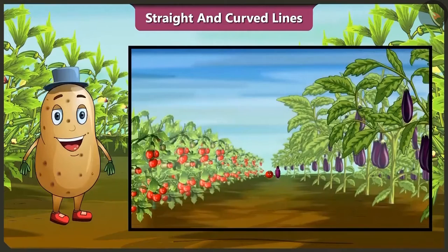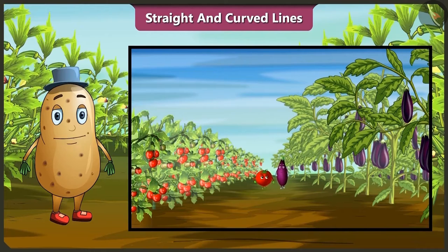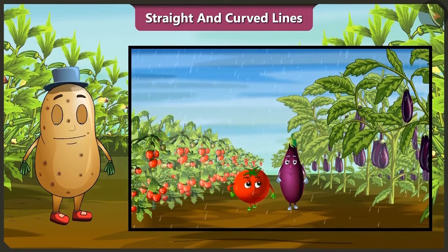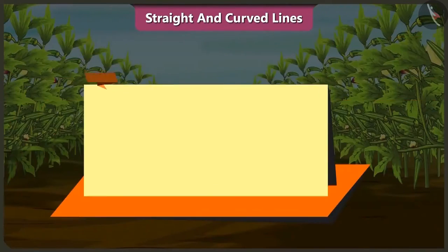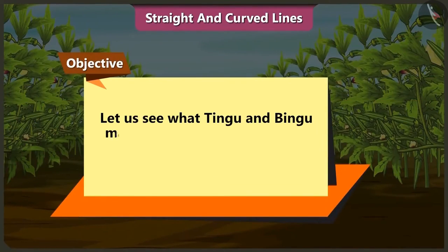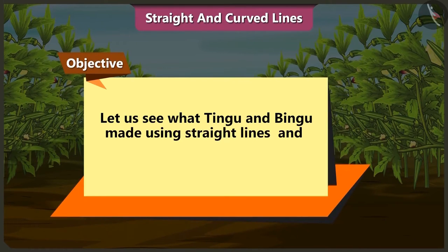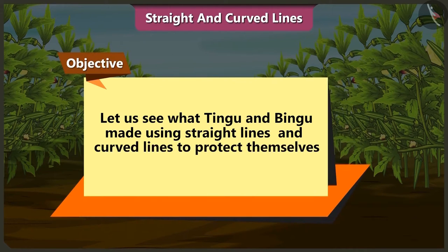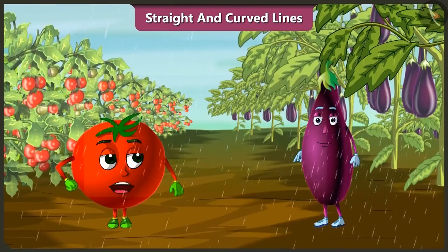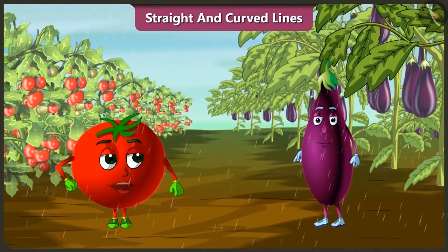Friends Tingu and Bingu have gone for a walk without taking the umbrella. Suddenly it starts raining. Let's look at what Tingu and Bingu made using straight and curved lines to protect themselves from rain.